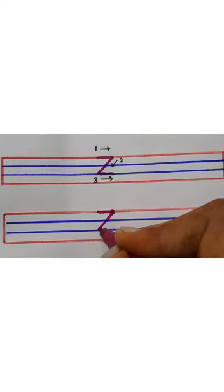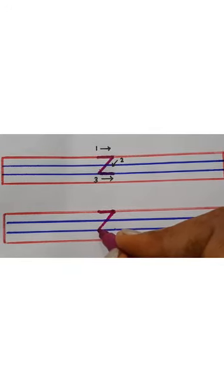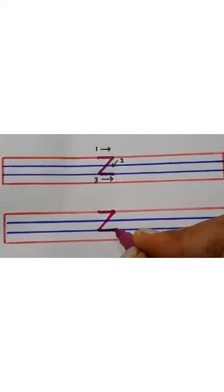And now, draw a sleeping line. Move the pencil towards right. So, this is how we write letter Z.